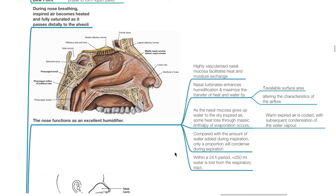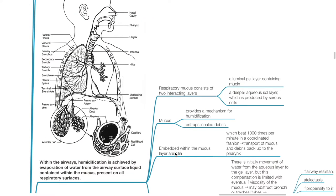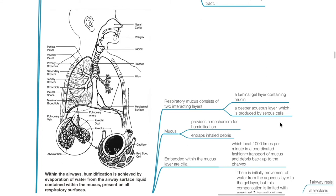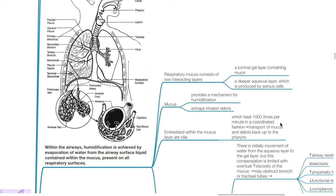Compared with the amount of water added during inspiration, only a proportion will condense during expiration. Within a 24-hour period, about 250 ml of water is lost from the respiratory tract. Within the airways, humidification is achieved by evaporation of water from the airway surface liquid contained within the mucus present on all respiratory surfaces. Respiratory mucus consists of two interacting layers: a luminal gel layer containing mucin and a deeper aqueous layer produced by serous cells. Mucus provides a mechanism for humidification and entraps inhaled debris. Cilia embedded within the mucus layer beat 1000 times per minute in a coordinated fashion to transport mucus and debris back up to the pharynx.